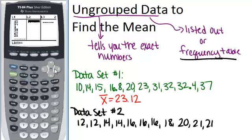Now I'm going to go over to list 2, and here I'm going to put how many times each number appeared. So 12 appeared 2 times, 14 also appeared 2 times, 16 appeared 3 times, 18 appeared only once, 20 appeared once, and 21 appeared twice.